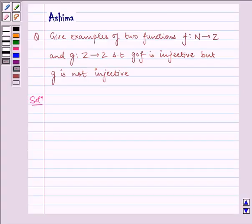Hello and welcome to the session. Let us discuss the following problem today. Give examples of two functions f from N to Z and g from Z to Z such that g of f is injective but g is not injective.